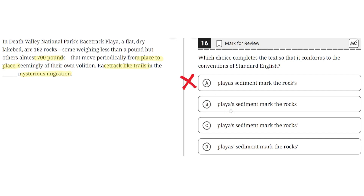Answer B: 'playa's apostrophe s, sediment marks the rocks' with no apostrophe. This is incorrect, because although the apostrophe is used correctly in playa's, which is before the s, there is no apostrophe used for the rocks, where there should be an apostrophe after the s to show that there are multiple rocks and they each have their own mysterious migration. So B is incorrect.